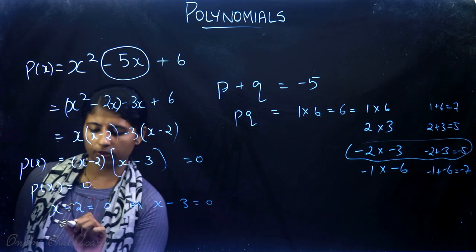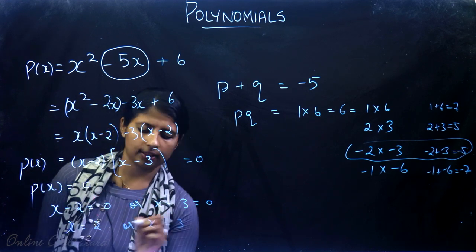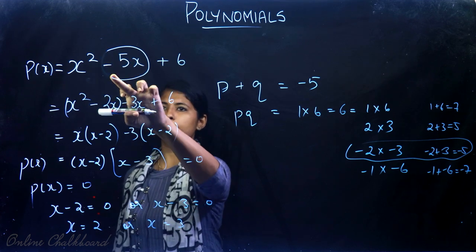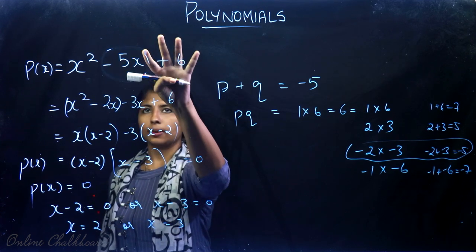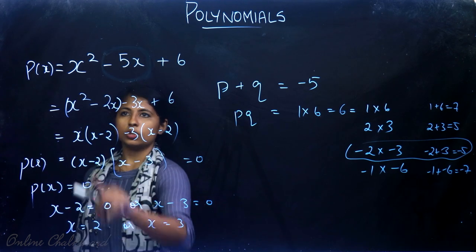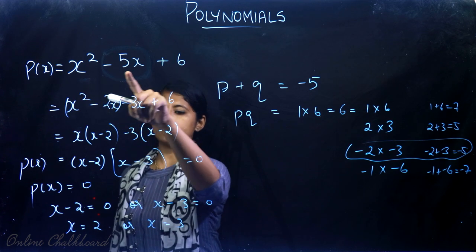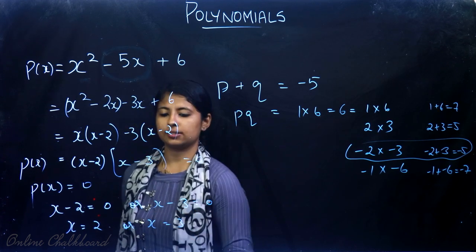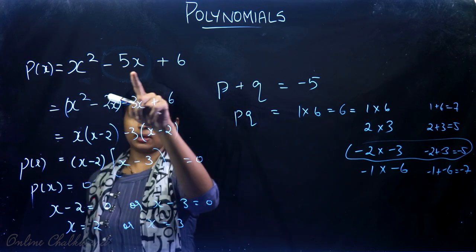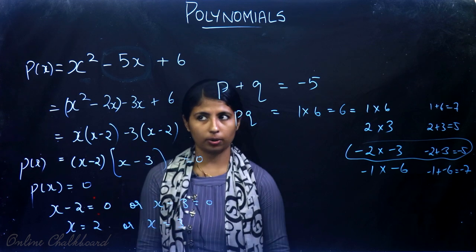For p(x) to become 0, either (x - 2) = 0 or (x - 3) = 0, therefore x = 2 or x = 3. We can verify: 2² - 5(2) + 6 = 4 - 10 + 6 = 0, and 3² - 5(3) + 6 = 9 - 15 + 6 = 0. So the zeros of x² - 5x + 6 are 2 and 3.